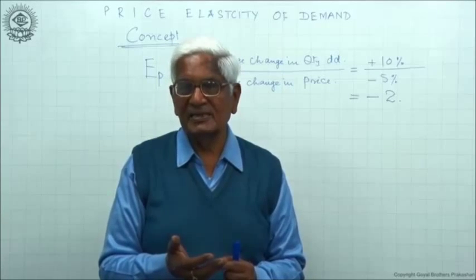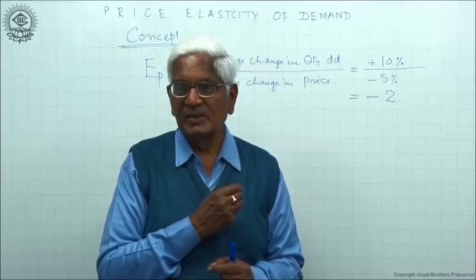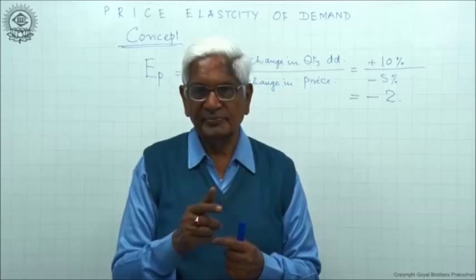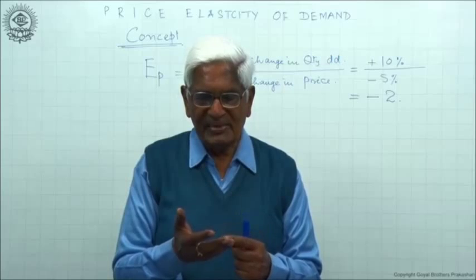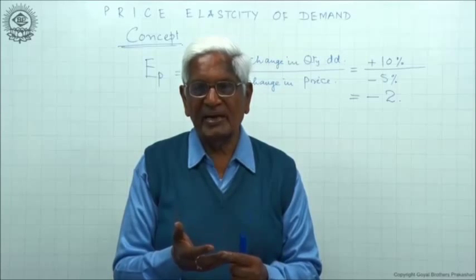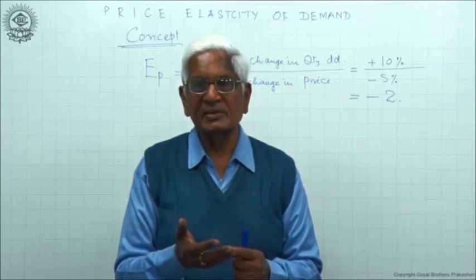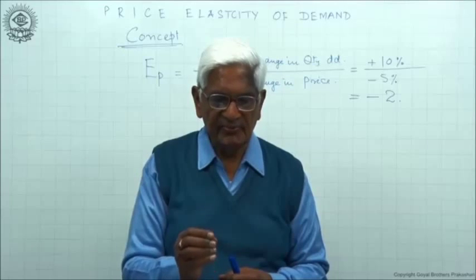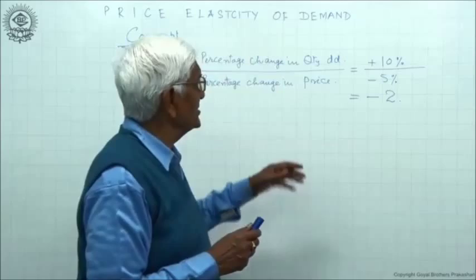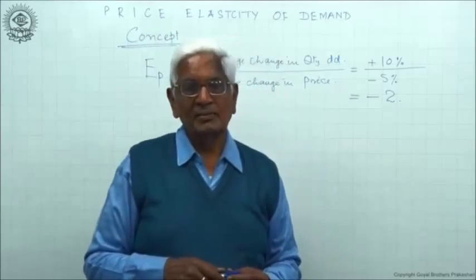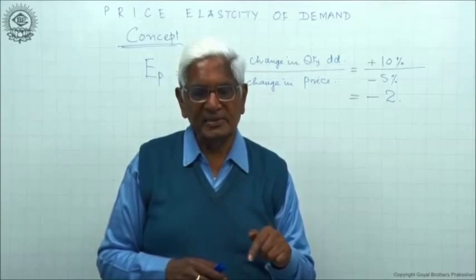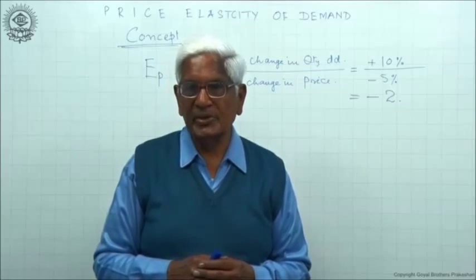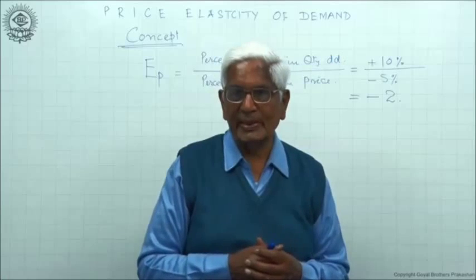The 2 is derived. Now, leave out minus first and then we talk of minus later. The value 2 means 1% change in price leads to 2% change in demand. We can improve this statement further: since we have used a minus sign, the minus sign indicates an inverse relation between price and demand. So minus 2 means 1% fall in price leads to 2% rise in demand.